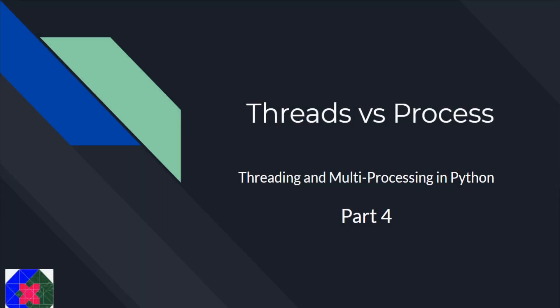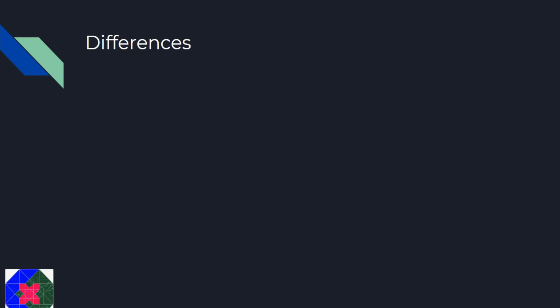Hello everyone, welcome to CampusX. In the previous videos we have already seen how we can use threads and processes. We have also seen how we can optimize them using pools. In this video we will first see the advantage of one over the other, and we will also see where we use threads and where we use processes, and then we will see some real world examples. Let us first see the differences between them.